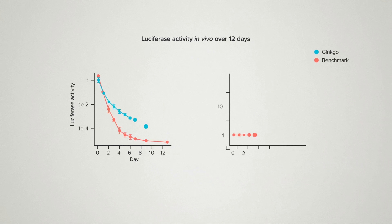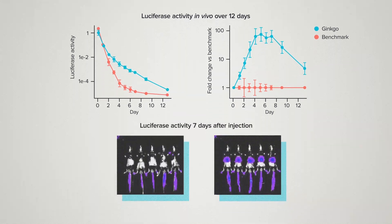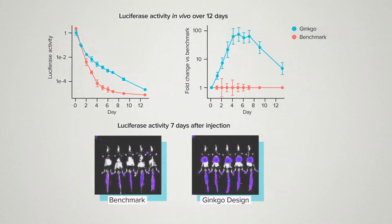You might ask: are we solving the real problem here? Are we optimizing for stability in cell lines when what really matters is stability in patients? In this case, the improved stability does translate into an animal model. The optimized RNAs were packaged into lipid nanoparticles, then delivered into a mouse. The payload was the bioluminescent protein luciferase, which produces a light signal we can quantify over time. The optimized RNA remained functional longer, with 30 to 100 times more activity depending on the time point, including significantly more function at seven days. One week after injection, we still see luciferase activity in the Ginkgo-design mice, while the benchmark mice are blank. And this was true for three different sequence designs.